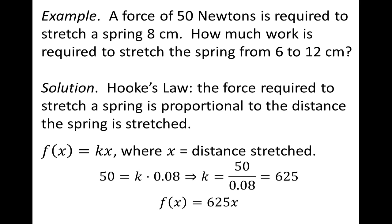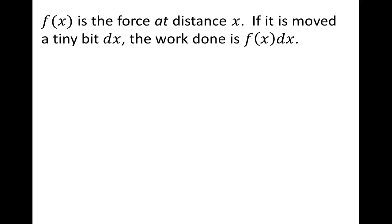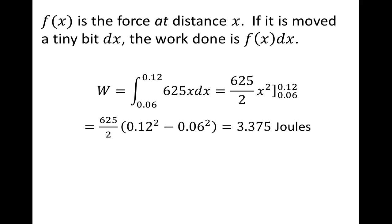That's the force we're exerting on the spring when the spring has been stretched x meters. If we move it just a little bit, the force isn't constant, but it's essentially the same value over a very small distance. We call that small distance dx. The work done by stretching the spring just a little bit is force times distance: f(x) dx. We want to do this from 6 centimeters to 12 centimeters, converting to meters, so our work is the integral from 0.06 to 0.12 of 625x dx.